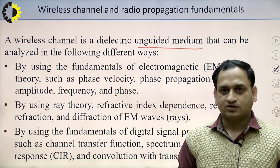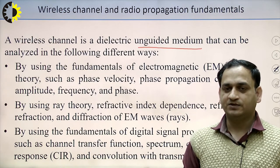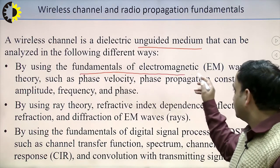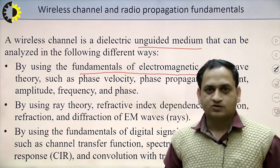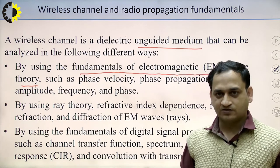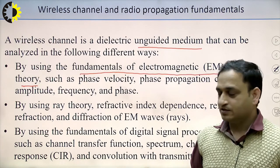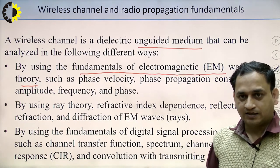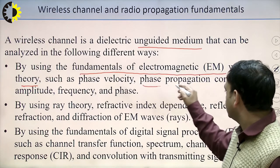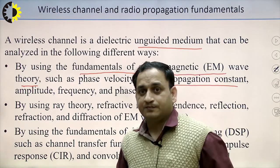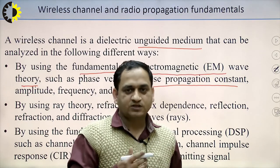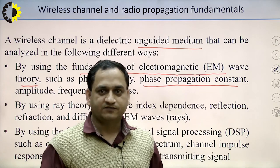There are different ways through which the wireless channel can be analyzed. The first one is the fundamentals of electromagnetic wave theory. The parameters we can go through are the phase velocity, phase propagation constant, amplitude, frequency, and phase. This phase propagation constant comprises the attenuation constant and the phase constant itself. All these parameters can be analyzed through electromagnetic wave theory.